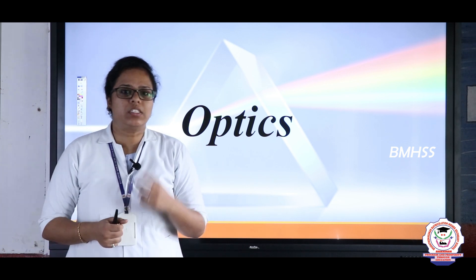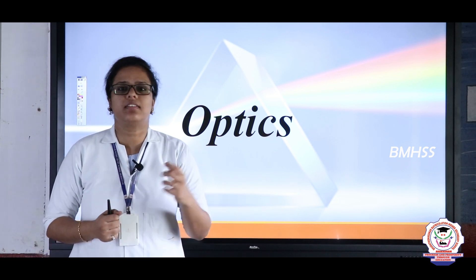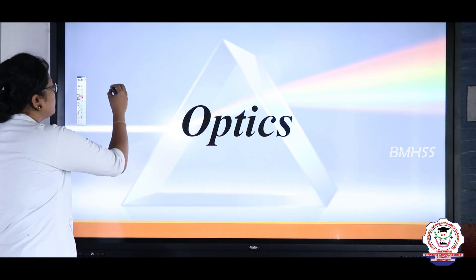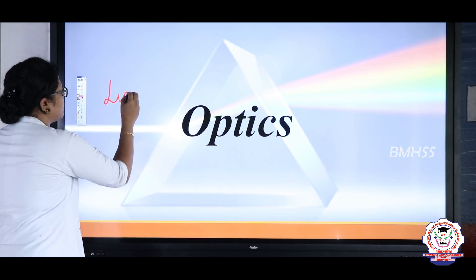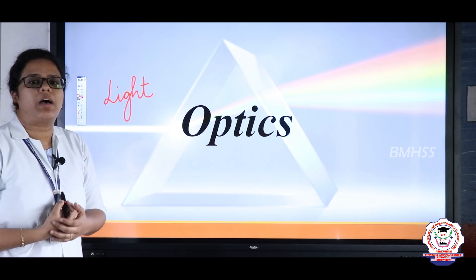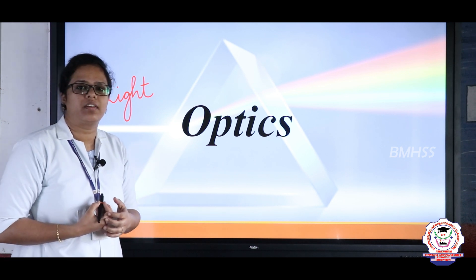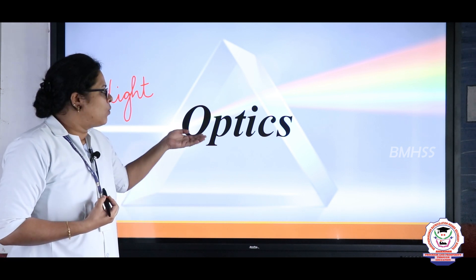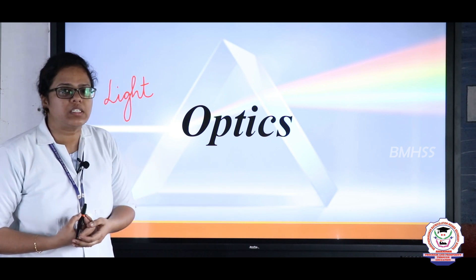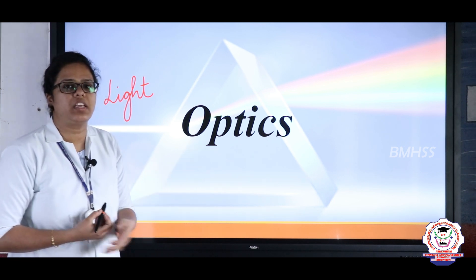We see a lot of things around us through our eyes. Then why don't the eyes see things in the dark or at night? This is because of light. Throughout this chapter, we will be studying the behaviour and properties of light. Our lesson name is Optics. Optics is a branch of physics which deals with the behaviour and properties of light.